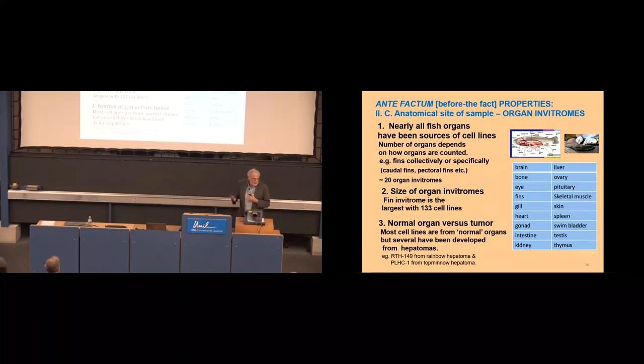And then, of course, you can consider whether it was from a normal tissue or organ or whether it was from a tumor. And nearly all the cell lines are described as normal, as most of us are not pathologists when we grab that liver from the fish. But to us it seems normal. But there are at least two cell lines from hepatomas, RTH149 from rainbow trout and PLHC from hepatomas. And that's because they could experimentally induce hepatomas in the fish and then grab the hepatoma and start the cell line. So most organs have then been the source of cell lines.